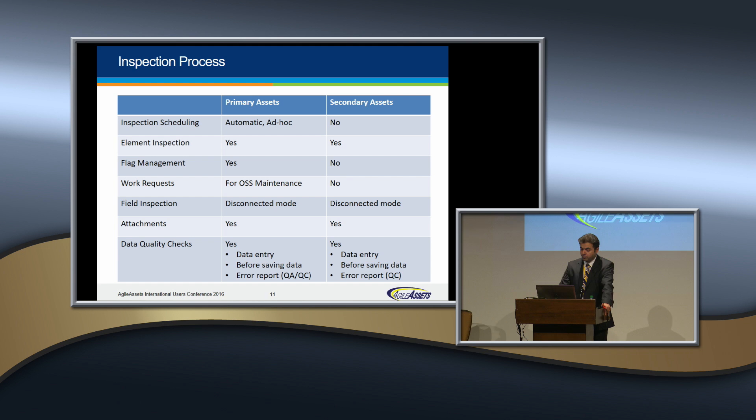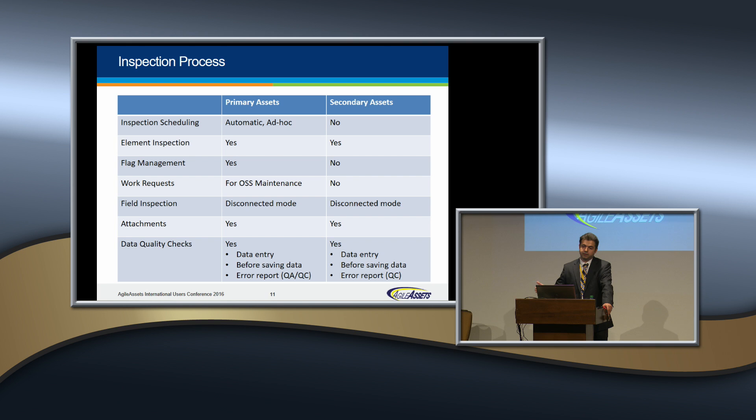Data quality checks are available at three levels: data entry, before saving data, and error report. Data entry means, for example, if a field's maximum length is five digits, the user cannot enter six or four digits. Before saving, error checking means that if field A is one value, then another field should be filled out or should be null — essentially cross-field error checking.